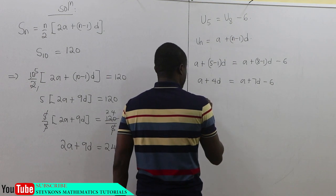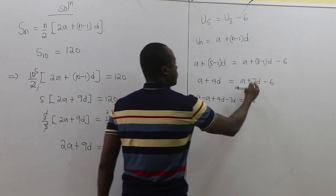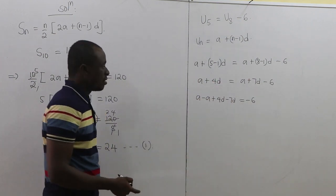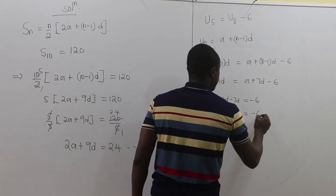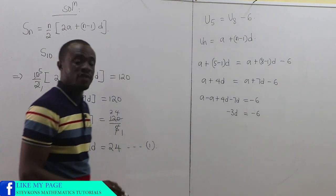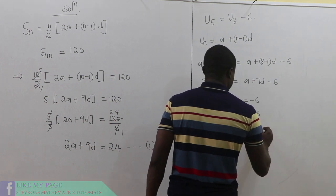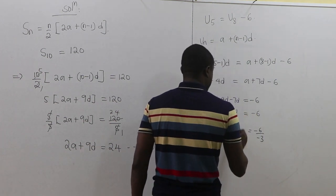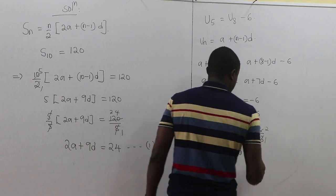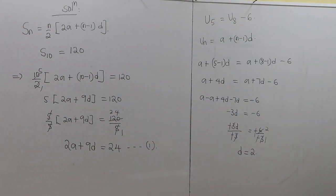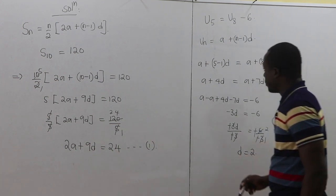Rearranging: A - A + 4D - 7D = -6, so -3D = -6. Dividing both sides by -3: D = 2. So the common difference is 2.